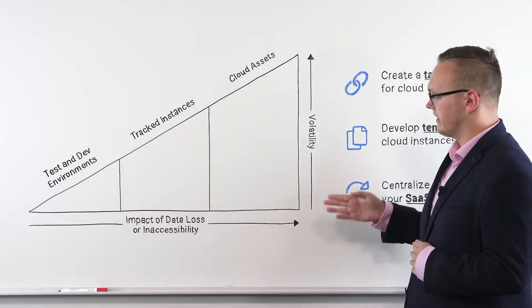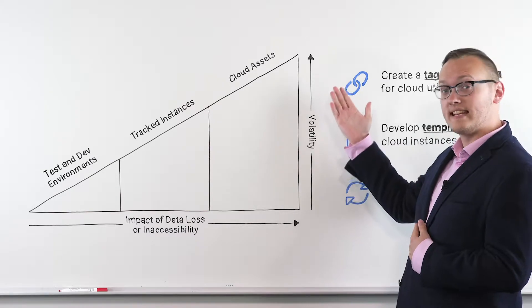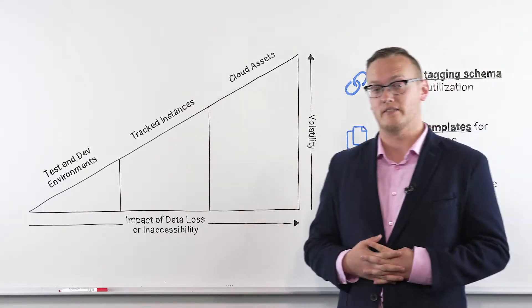The second is demand volatility. The potential to which the instance's compute, storage, or bandwidth can vary.